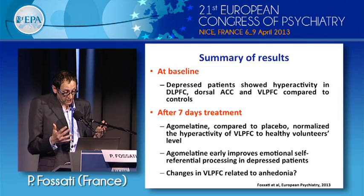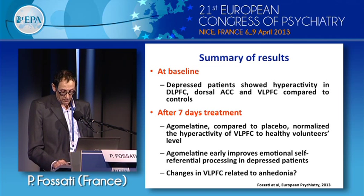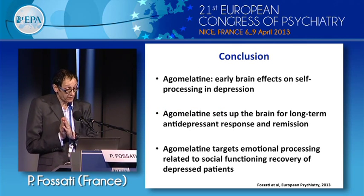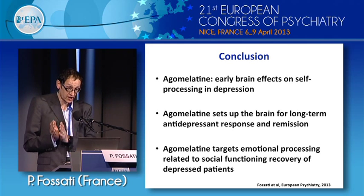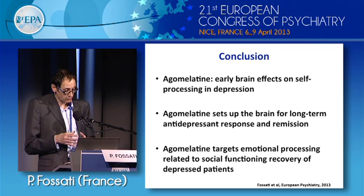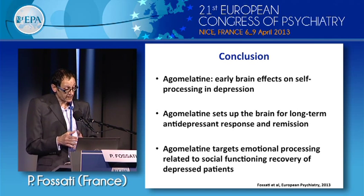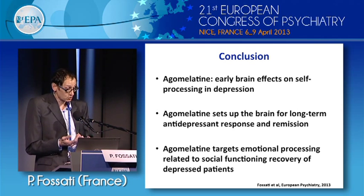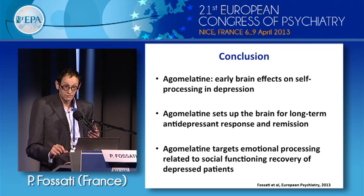To conclude: agomelatine has early brain effects on self-processing in depression, observed before any changes in clinical symptomatology. We can say that agomelatine sets up the brain for long-term antidepressant response and remission, and that agomelatine targets emotional processing related to social functioning recovery in depressed patients. Thank you for your attention.